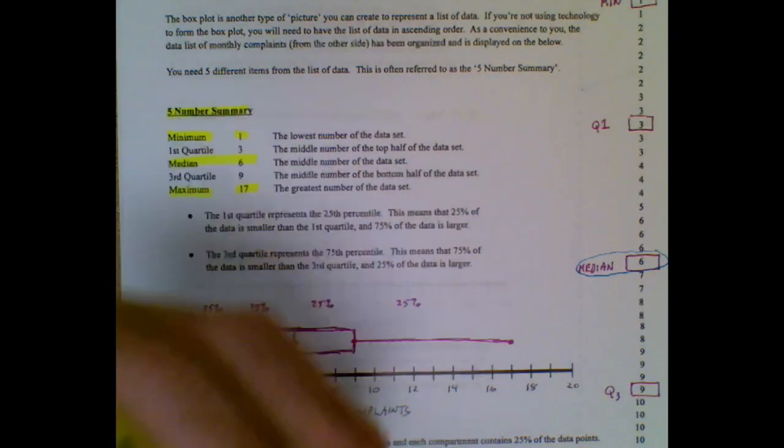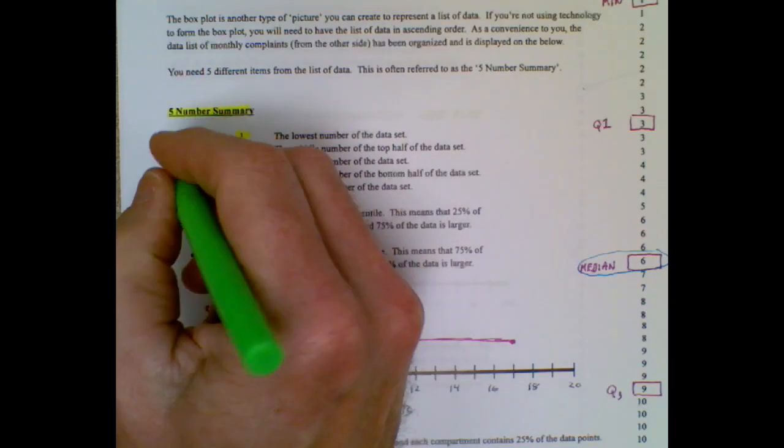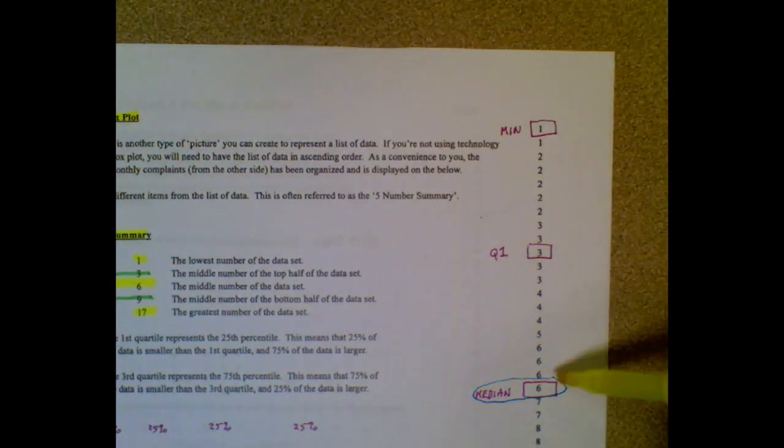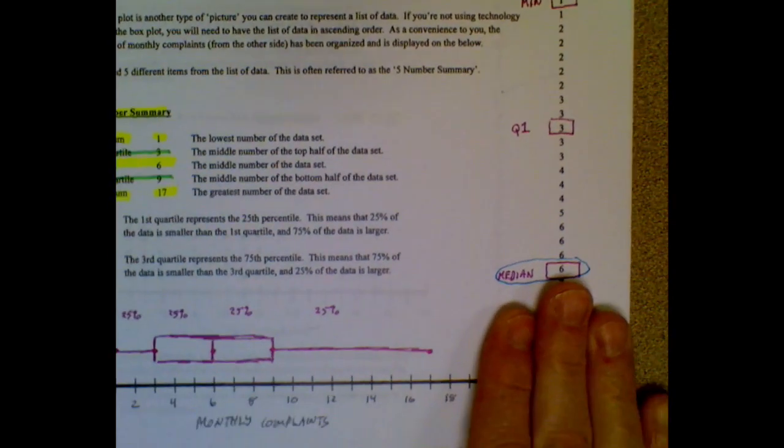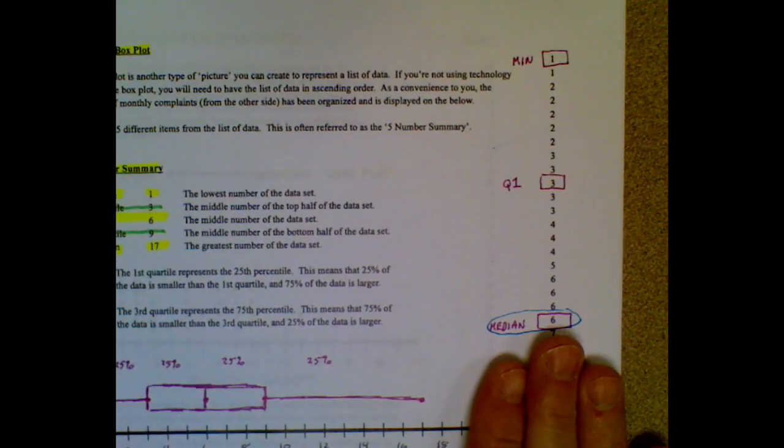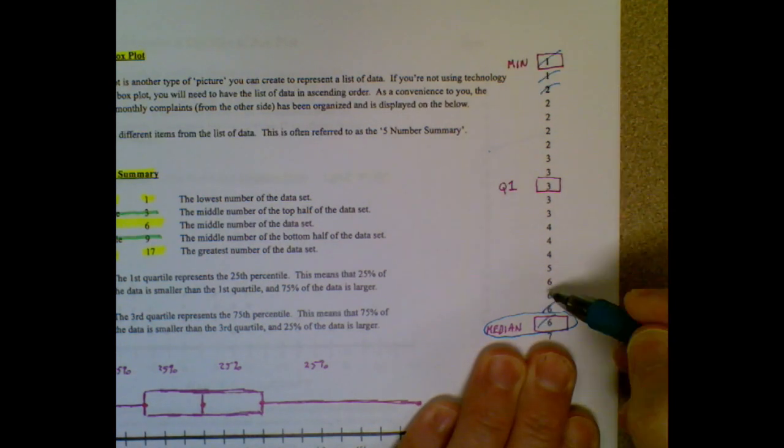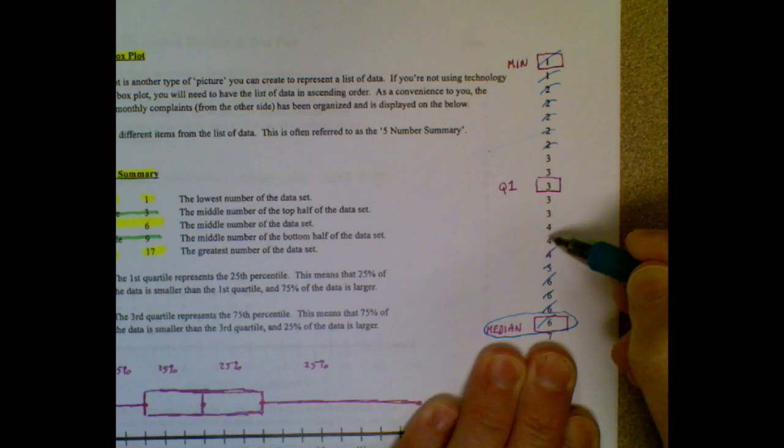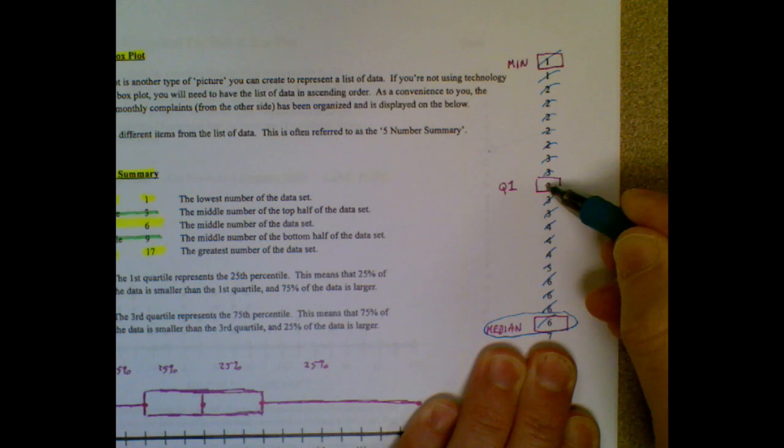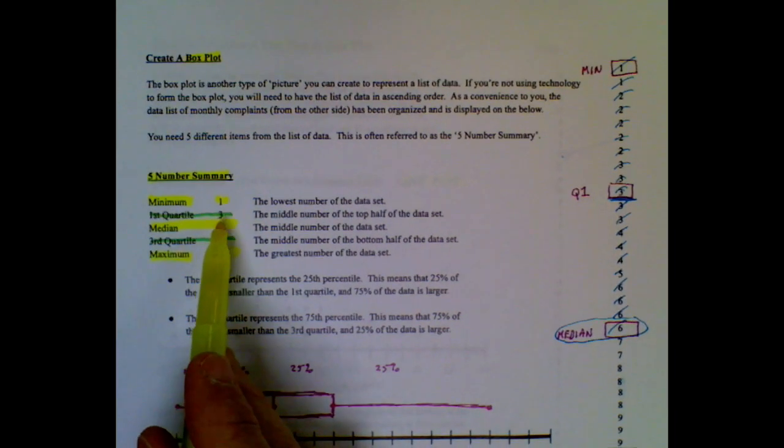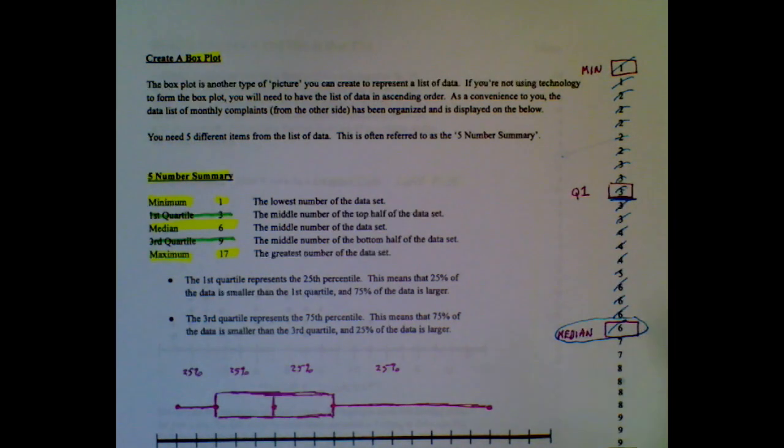So two new things for you now will be what's called the first quartile and the third quartile. We haven't done these before. So let's take a look. If I take the top or this part of my data, ranging from the one, which is the minimum, to the six, which is the median, I'm going to ignore the other half of the data set. And now I can find by crossing off top and bottom, top and bottom, and I keep doing that, and I'm going to arrive at what's called the first quartile. And the first quartile would fall right here between the three and the three. So we're going to call it a three. And my first quartile is three. This is the middle number of the top half of the data set.